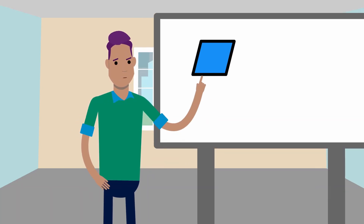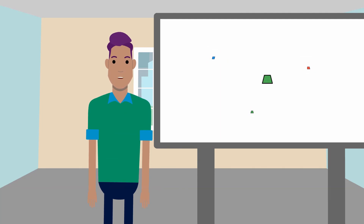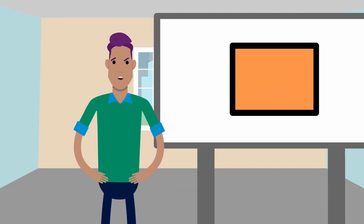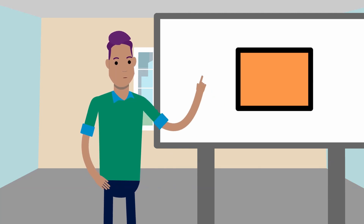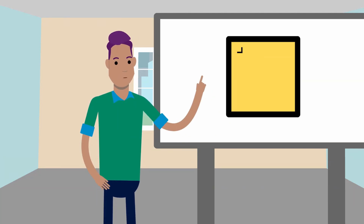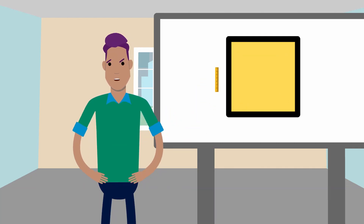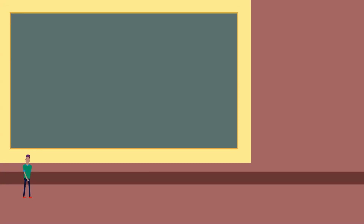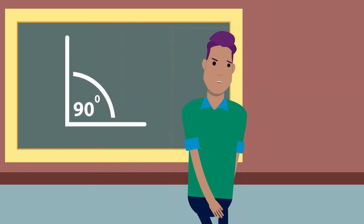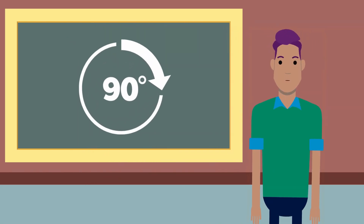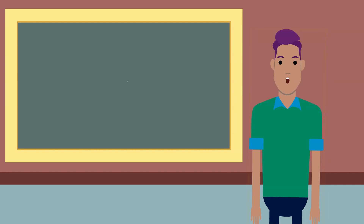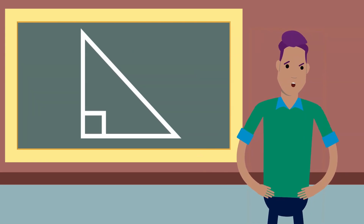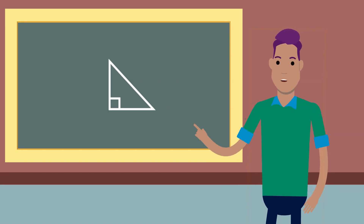In geometry, a quadrilateral is a four-sided shape having four edges, sides, and four corners — vertices. A rectangle is a quadrilateral with four right angles. A square has four right angles in addition to four equal length sides. A right angle is an angle of exactly 90 degrees and can correspond to a quarter turn. Perpendicular lines are lines that form right angles at their point of intersection. The presence of a right angle in a triangle is the defining factor for a right triangle.